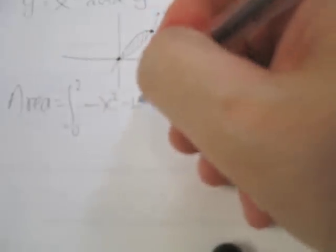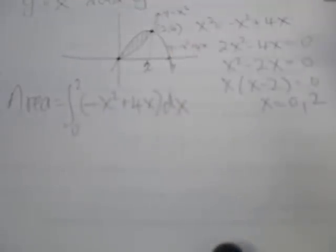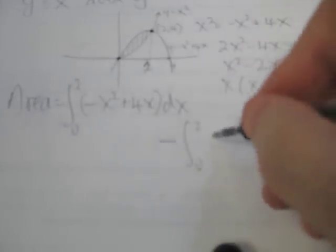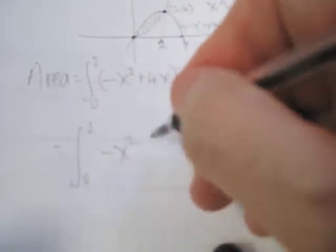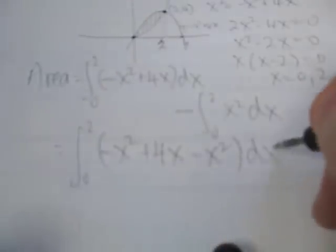So, consequently, our area is going to be equal to the integral from 0 to 2 of the upper curve with respect to dx minus the integral from 0 to 2 of the lower curve with respect to dx. Now, because the limits of integration are the same, this is really just the integral from 0 to 2 of negative x squared plus 4x minus x squared with respect to dx.